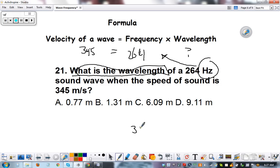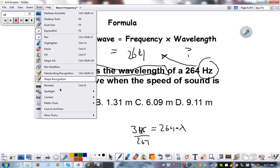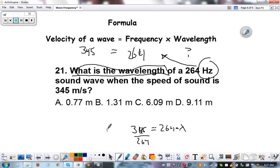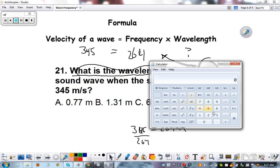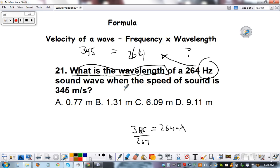Question mark. 345 equals 264 times wavelength. Divided by 264. And we get... 345 divided by 264. 1.3 hertz. So, the answer is B. 1.3 hertz.